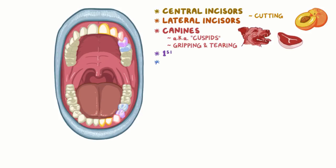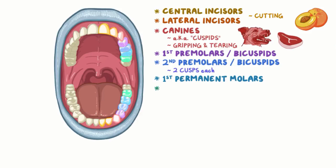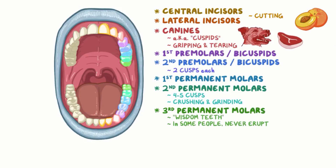Then there are the first and second premolars, or bicuspids, which have two cusps each. Next comes the first permanent molars and the second permanent molars. Molars usually have four to five cusps and are great for crushing and grinding food. Lastly, there are the third permanent molars, or wisdom teeth, which in some people never erupt at all. Altogether, that makes 32 permanent teeth.